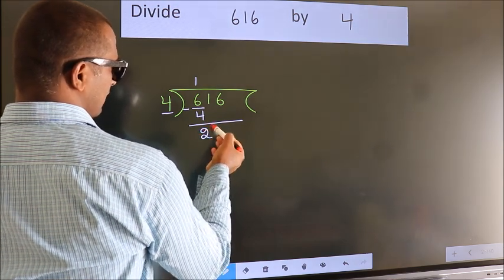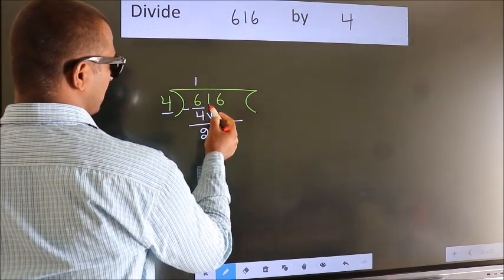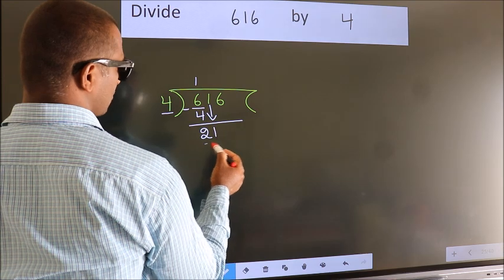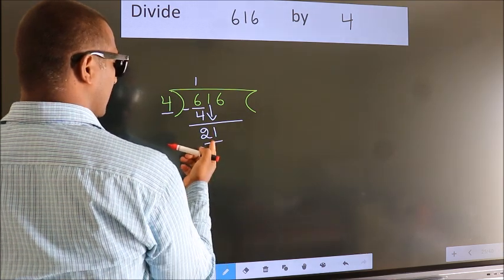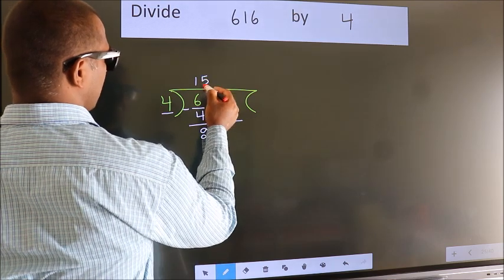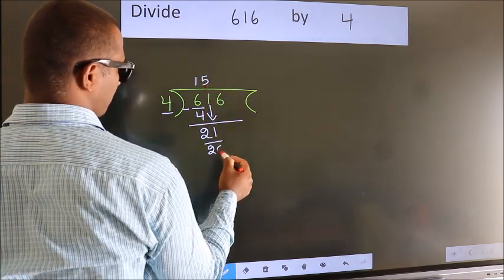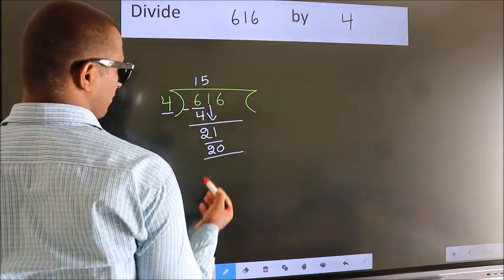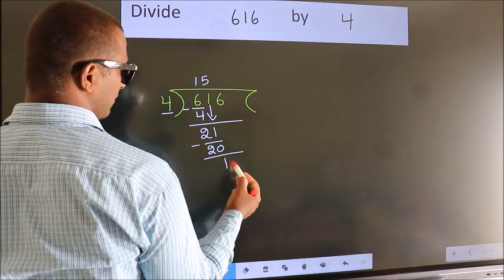After this, bring down the beside number. So 1 down. So 21. A number close to 21 in 4 table is 4 5s 20. Now we subtract. We get 1.